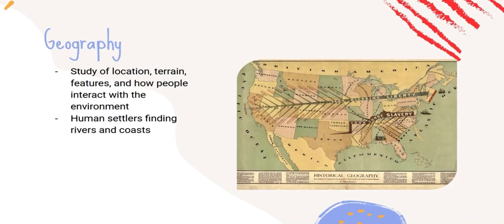Next, we have geography, which is the study of location, terrain, features, and how people interact with the environment and the land. An example of this could be human settlers finding rivers and coasts and interacting with them.